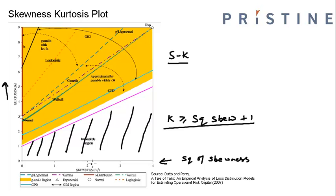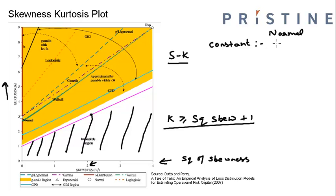So we can see that two plus one equals three, so no distribution can lie below this point. Different distributions can assume different skewness kurtosis combinations — either it can be a constant. That is, a particular distribution can have a constant skewness or kurtosis. An example would be the normal distribution, which has a skewness of 0 and kurtosis of 3, so normal distribution has a constant skewness kurtosis combination of 0, 3.